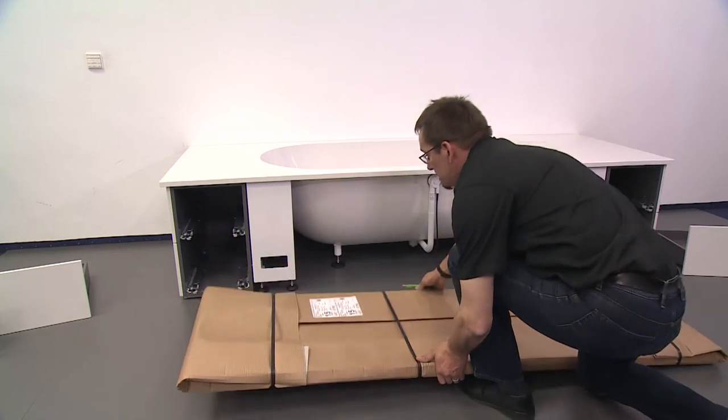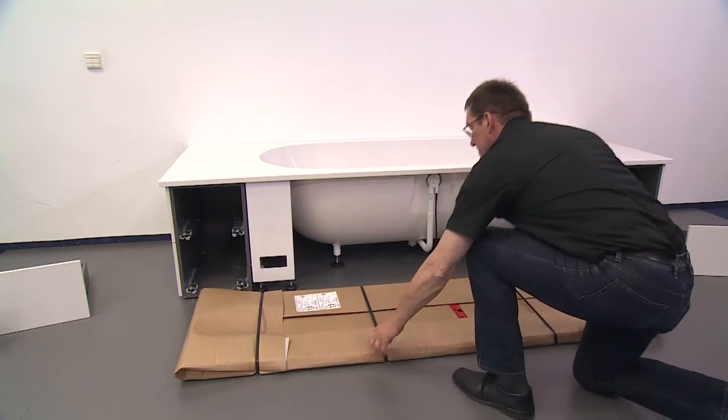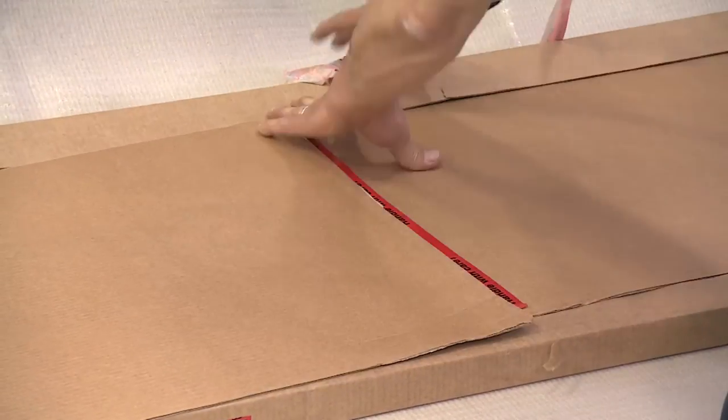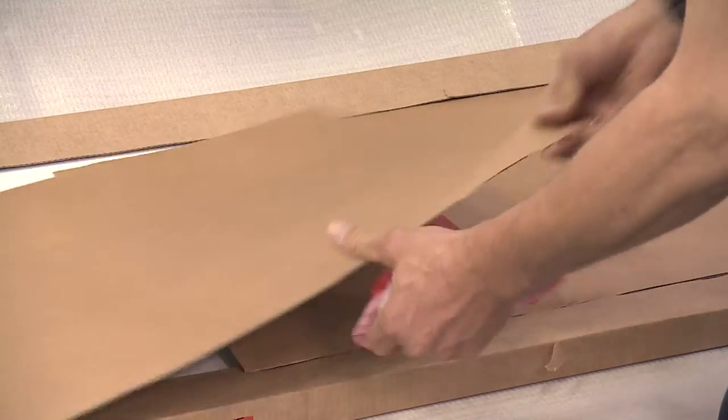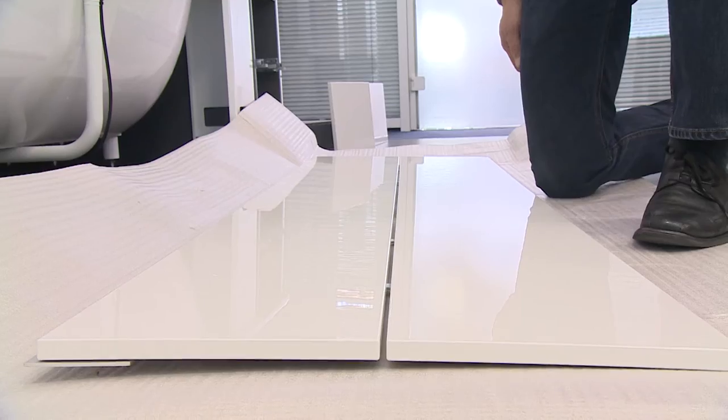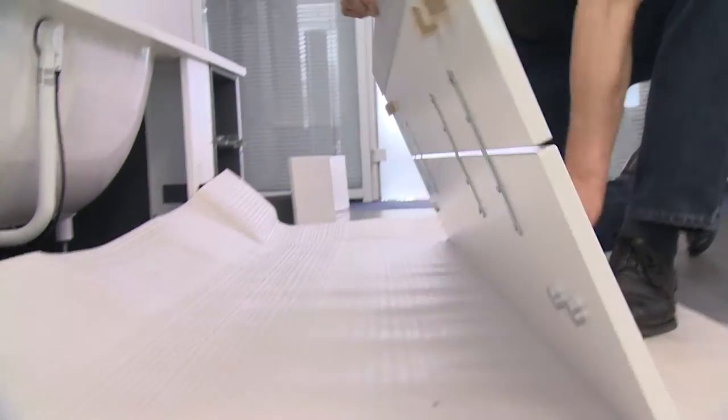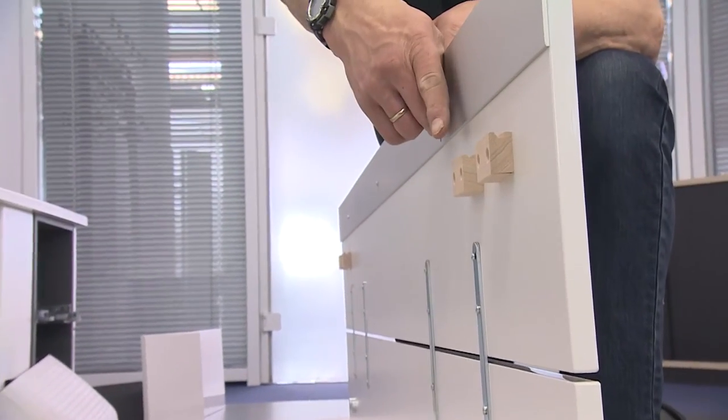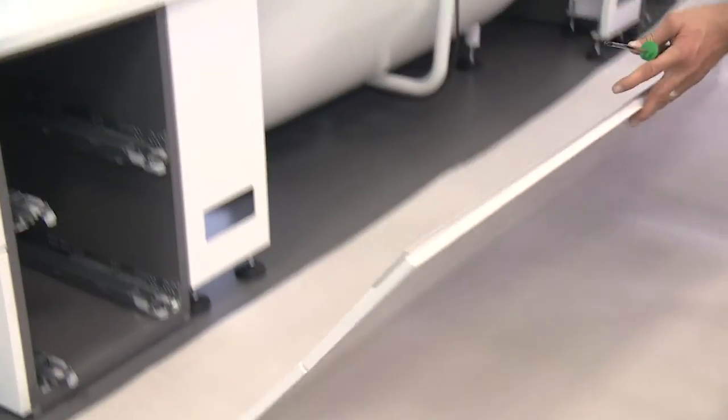You are now ready to install the bath panel. Carefully unpack. If you wish, you can use the cardboard packaging to support and protect the panel while you work. Depending on how the bath has been installed, remove the wooden block for which there is no matching recess in the metal frame.